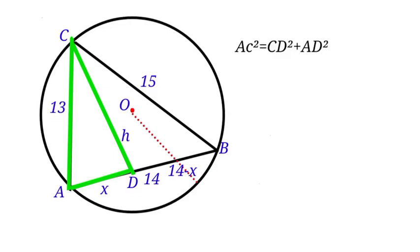AC is 13, CD is H, AD is X, so we have 13 squared equals H squared plus X squared. Let us move X squared to this side of the equation. We will have H squared equals 169 minus X squared. Let us call that equation 1.